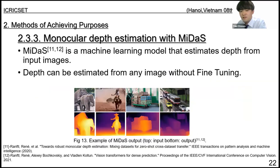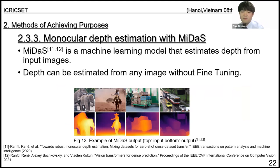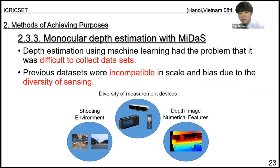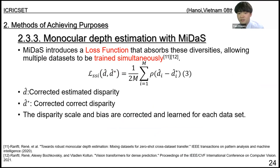This section describes the monocular depth estimation method. In this study, a machine learning model called MiDaS is used for depth estimation. MiDaS is a powerful model that can estimate depth values from any input image without requiring fine-tuning, as shown in Figure 13. Depth estimation using machine learning has faced the challenge of dataset diversity, making large-scale training difficult. MiDaS introduces a loss function that absorbs these diversities, allowing multiple datasets to be trained simultaneously.